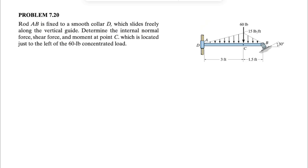We're going to start with the reactions at points D and B, and once we figure those out, we can move on to the free body diagram of this part of the beam. If we do a section at point C, we should be able to find all the internal forces as well as the bending moment. So let's start with the free body diagram of the whole system.